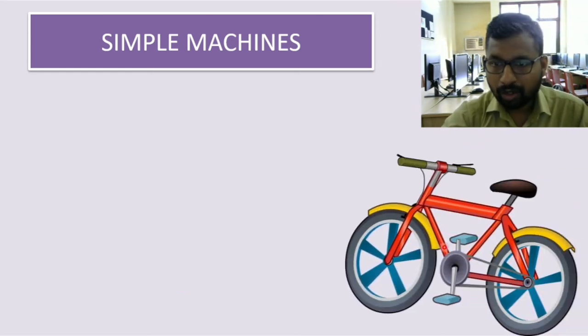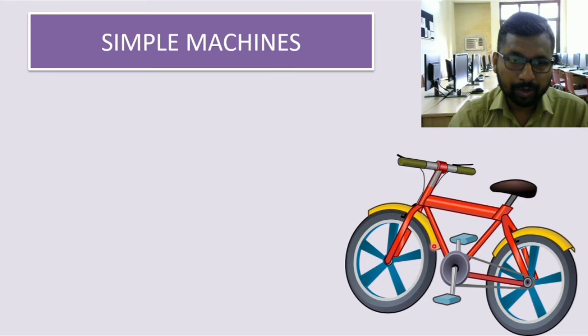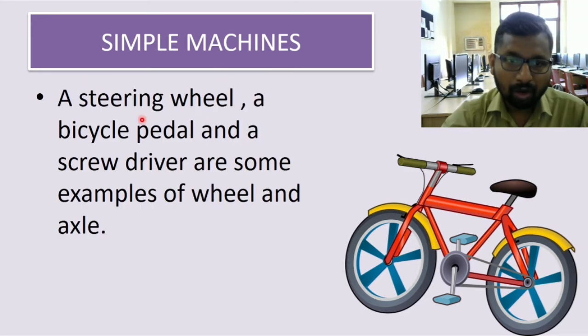This is a kind of wheel and axle machine. A steering wheel, a bicycle pedal, and a screwdriver are some examples. So here as you can see, this is a pedal of a bicycle. This is a kind of wheel and axle arrangement. This type of arrangement you will see in other vehicles also.